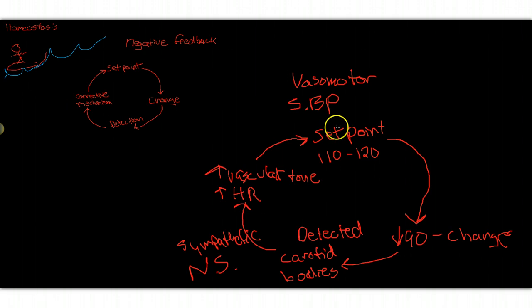Okay, so that is how the body maintains blood pressure according to the set point. The vasomotor center dictates the set point. Change is detected by sensors in the carotid bodies.